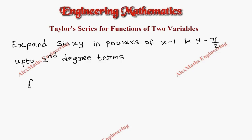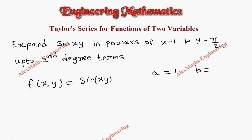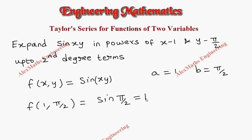The given function is f(x,y) = sin(xy). We identify a = 1 and b = π/2. Now, f(a,b) = f(1, π/2): when we substitute, it becomes sin(1 · π/2) = sin(π/2) = 1.